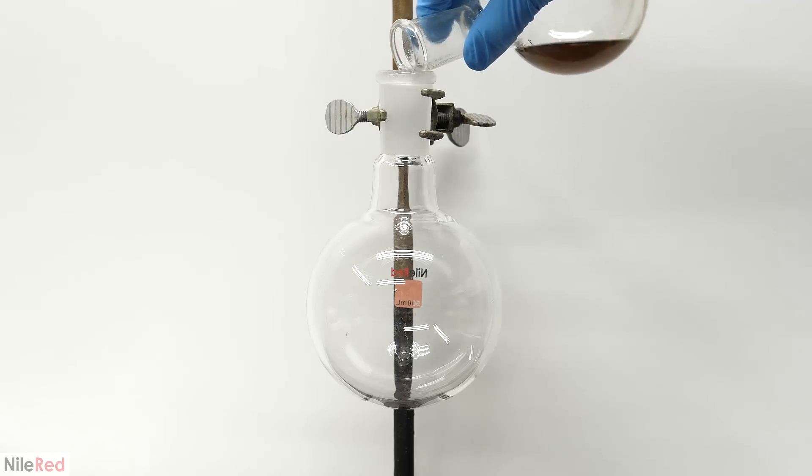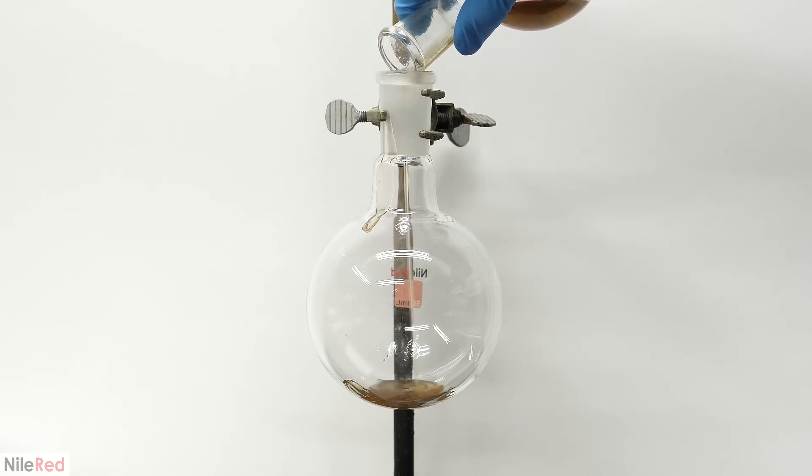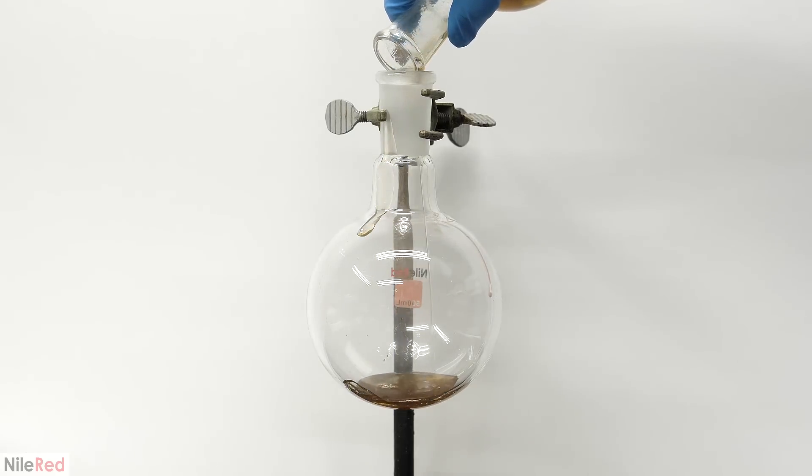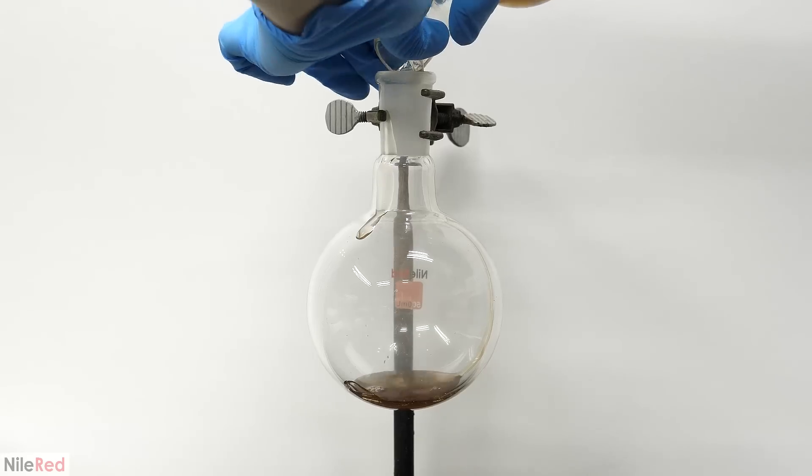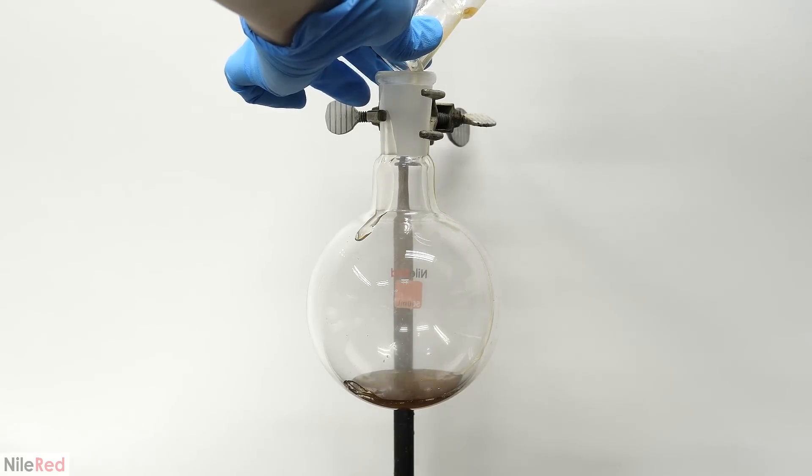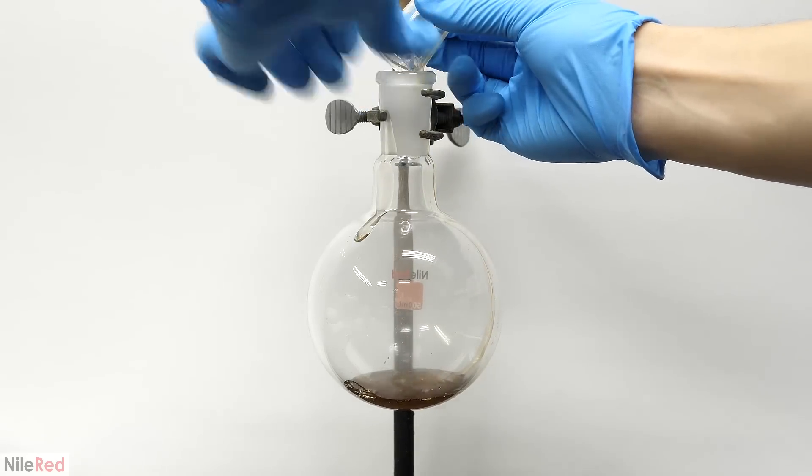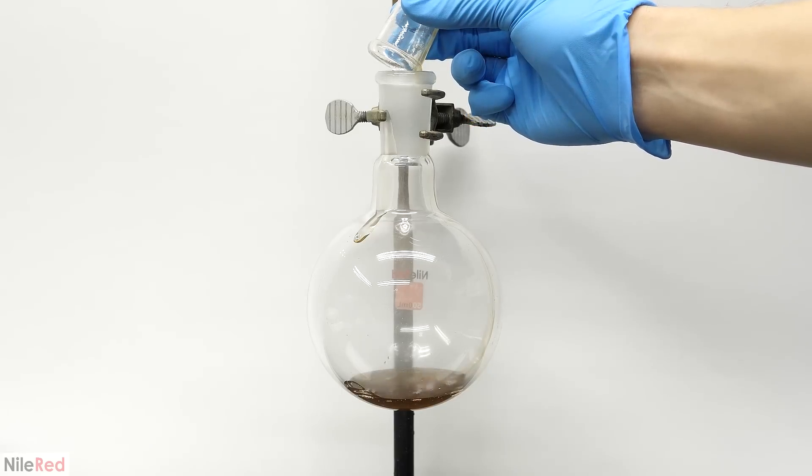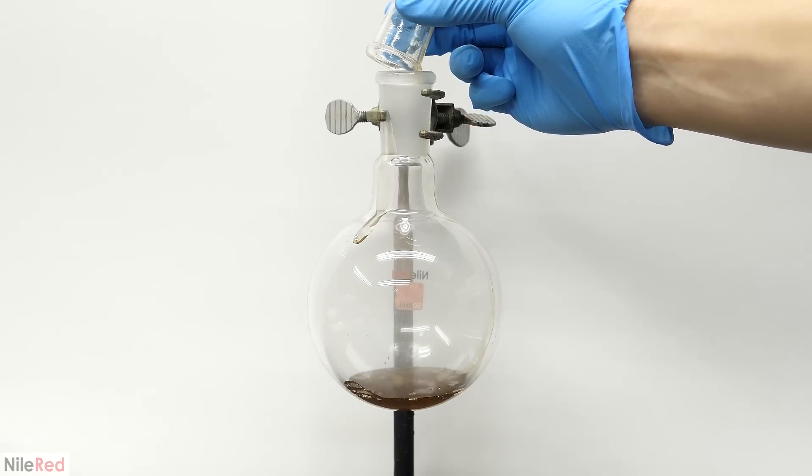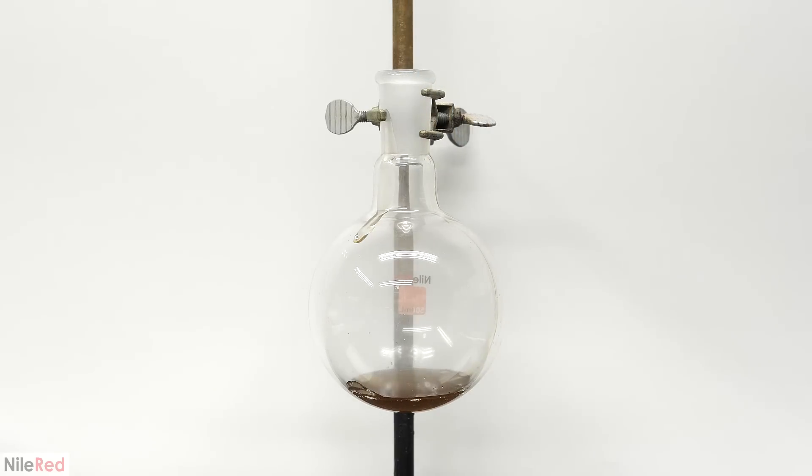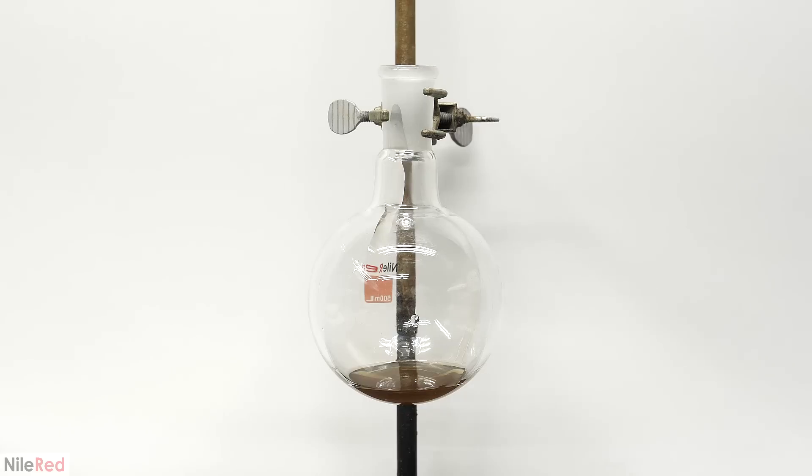For the next step, I had to get rid of the manganese catalyst, and I was originally planning to filter it. However, I found that it was a lot easier to just reheat the resin to make it a bit more liquidy, and then to pour it off into another flask. By doing this carefully and slowly, I was pretty much able to separate out all of it. When it was all in the new flask, I let it fully cool to room temperature.